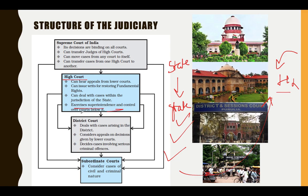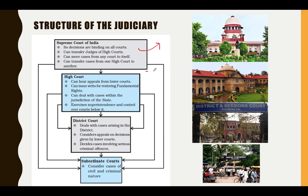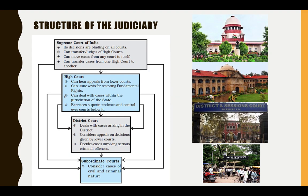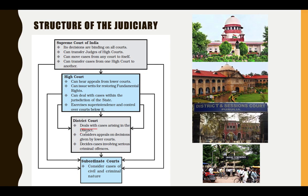The High Court exercises superintendence and control over the courts below it — just like the Supreme Court does over the High Court. The High Court is the father of the courts below. Since each state has many districts with many cases, if everyone went directly to the High Court it wouldn't be able to function. So district courts handle the bulk of cases at the state level.